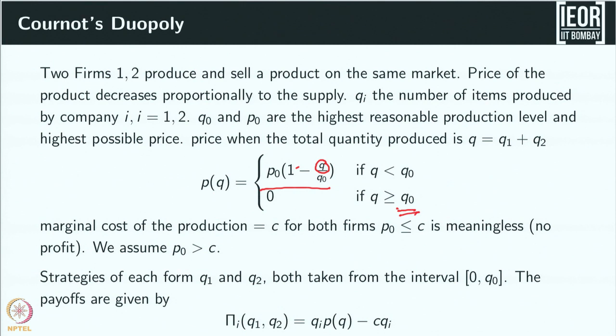We assume the cost of producing each unit is C, and the price can never be less than the marginal cost, so P_0 must be greater than C. Strategies for each firm: Q_1 and Q_2 are both chosen from the interval [0, Q_0]. Both firms have the same range of possibilities, and they choose Q_1 and Q_2 simultaneously.